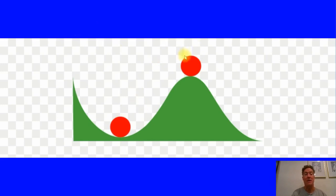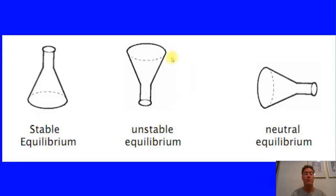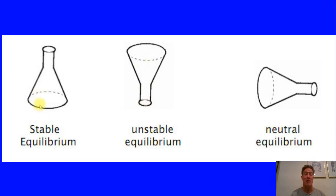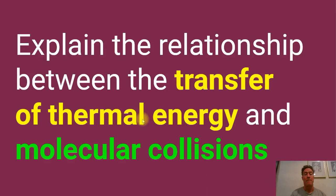Here's another example from chemical glassware. An Erlenmeyer flask oriented normally is stable, but flipped upside down it's unstable — it's in equilibrium, but it would take much less to dislodge it in that position than in the normal orientation.